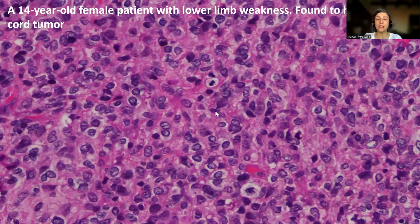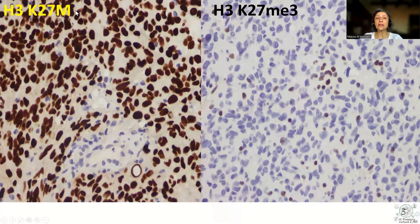Let's put this into context. This is a spinal cord tumor in a 14-year-old female patient, and it is a high-grade glioma. We have to specify whether this is consistent with diffuse midline glioma or not. The H3K27M shows positive nuclear staining in the tumor cells in the presence of a negative internal control, supporting that this is the mutant tumor. The trimethylation shows negative nuclear staining in the tumor cells in the presence of a positive internal control — either residual glial cells or endothelial cells.